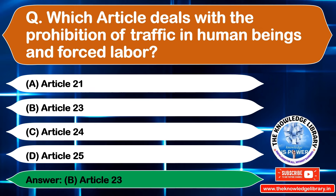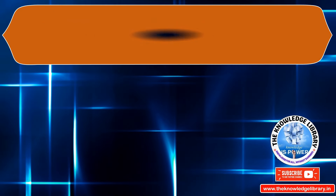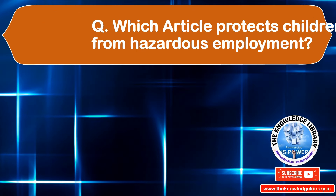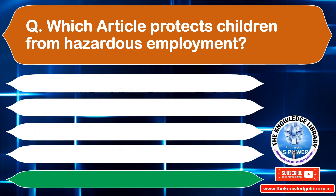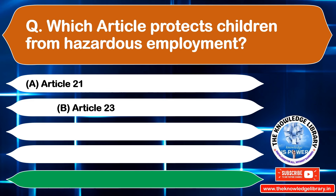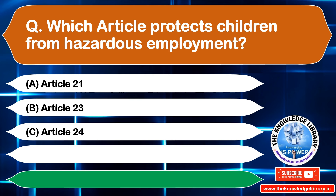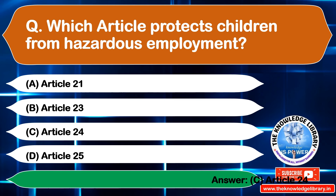The next question is: which article protects children from hazardous employment? Option A: Article 21, Option B: Article 23, Option C: Article 24, Option D: Article 25. The correct answer is Option C: Article 24.